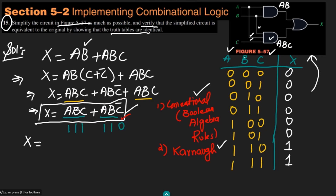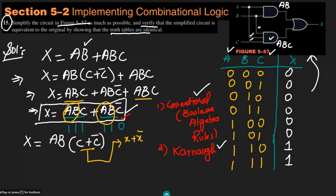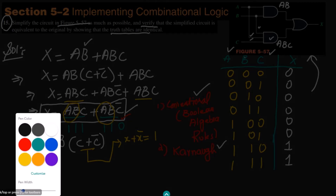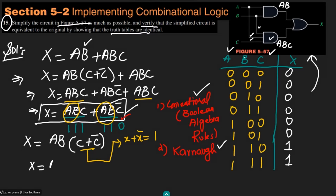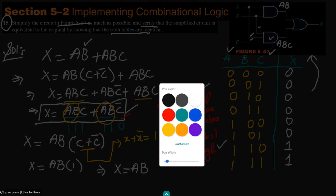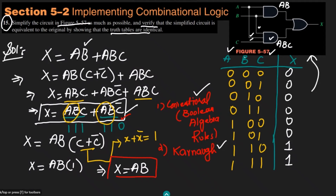From the expression ABC + ABC', I can see that AB is common to both terms. Factoring it out gives X = AB(C + C'). According to Boolean algebra, X + X' = 1, so C + C' = 1. Therefore X = AB × 1, which simplifies to X = AB.